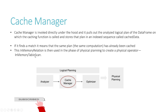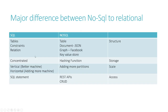Moving on — what is the difference between NoSQL and SQL? The differences relate to structure, storage, scale, and access. In terms of structure, SQL stores data in tables with constraints and relations, while NoSQL stores data in formats like JSON. For graph-based data like Facebook's, you can use Neo4j; for JSON-style storage you can use Cassandra or MongoDB.